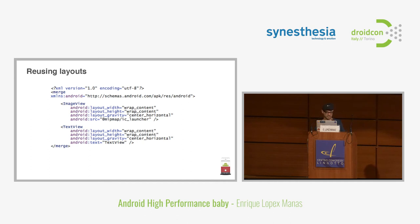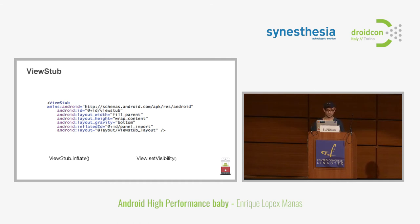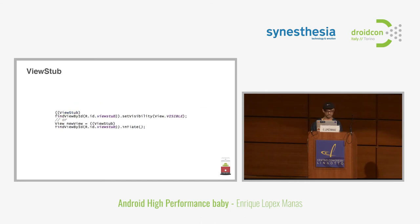Another option is the ViewStub class. ViewStub can be added as a node with a layout reference, but nothing is drawn on the screen until you inflate it at runtime using two different methods. It's very good for specifying placeholders and only inflating content when really needed, rather than putting your entire screen layout and playing with visibility — which is computationally more expensive. You can inflate it using ViewStub.inflate() or by setting its visibility.